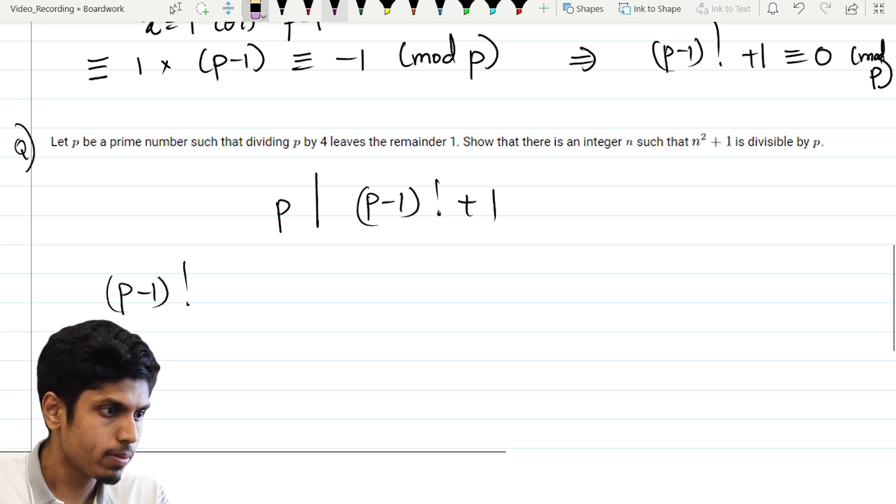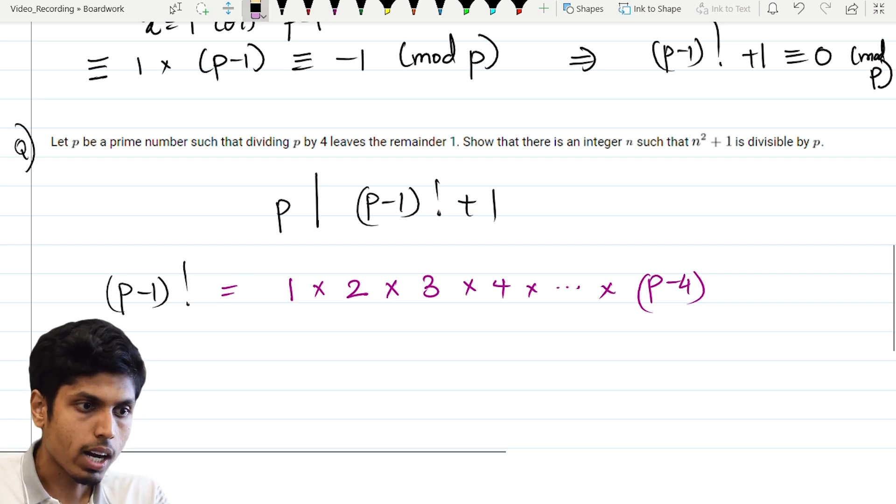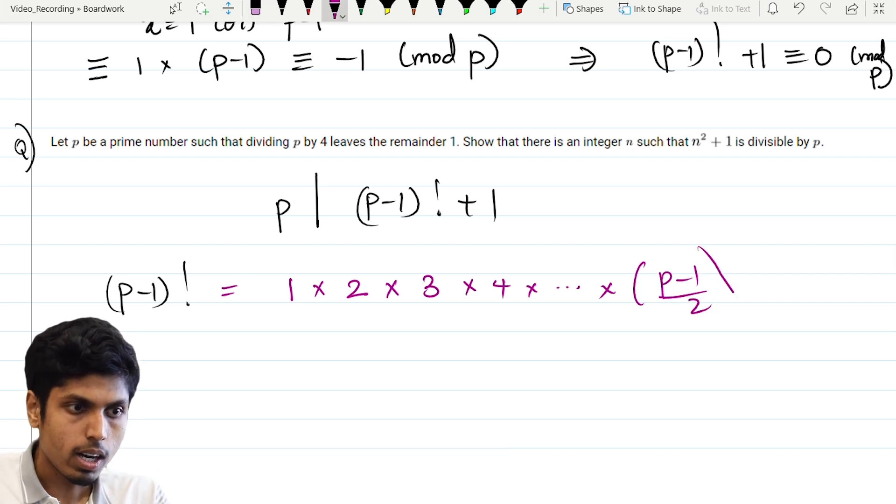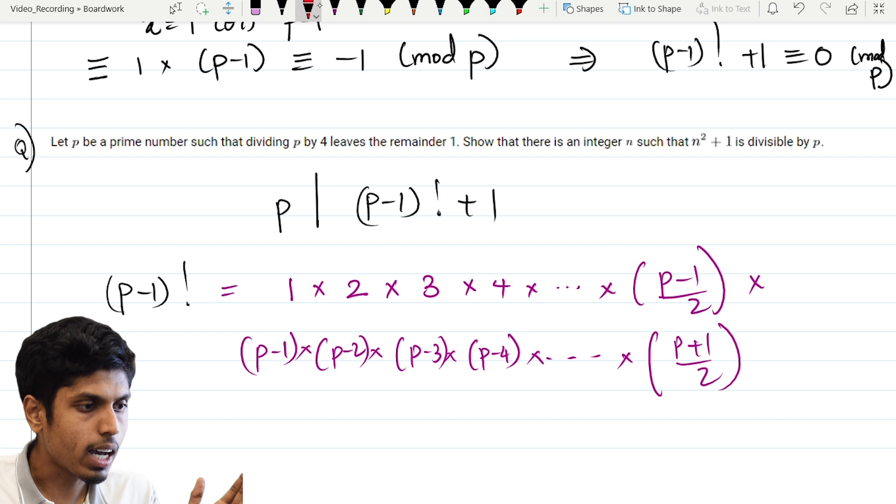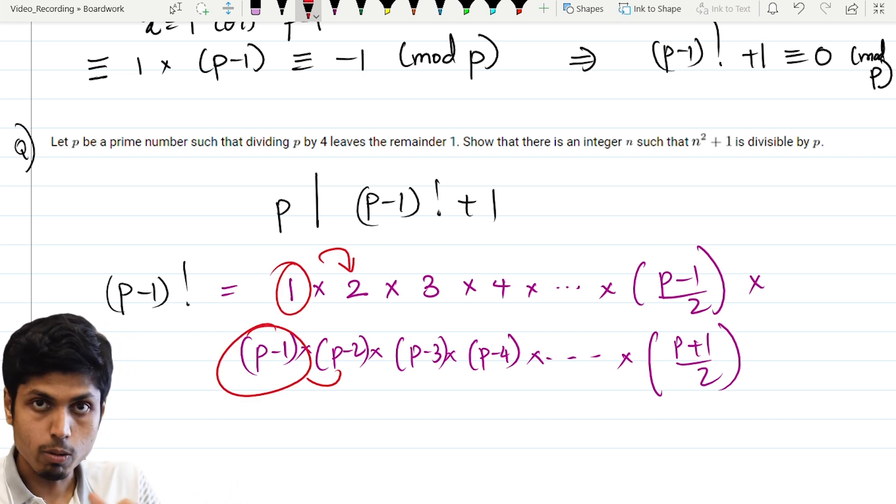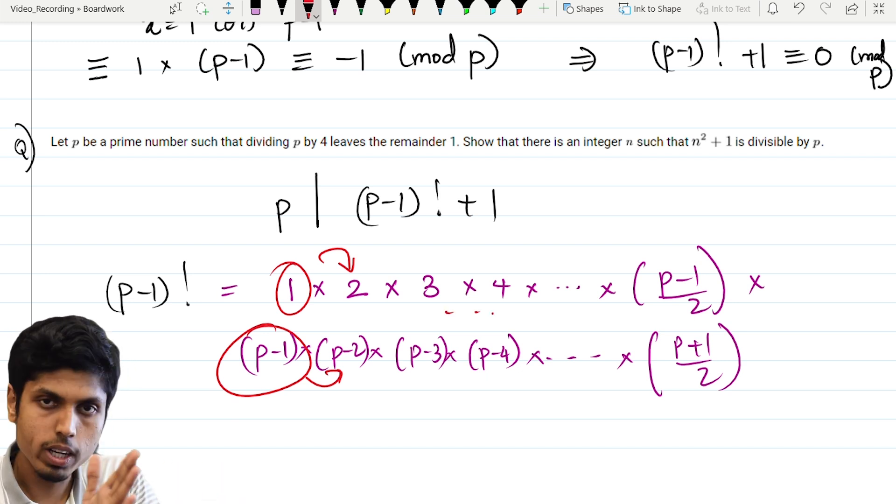First, let's consider only p minus 1 factorial. So this is equal to 1 times 2 times 3 times 4 all the way till, let me go till the half, it is p minus 1 by 2. And then you will have p plus 1 by 2 times p plus 3 by 2 all the way till p minus 4 into p minus 3 into p minus 2 times p minus 1. Now, take the product of first and the last term, that is 1 and p minus 1, and then the penultimate one and the number 2, that is 2 and p minus 2, and you can keep on moving like this.